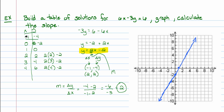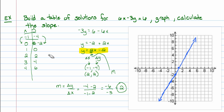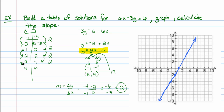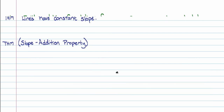I also want you to notice something here. When I start at x = -1 and take a step forward to x = 0 — a single step of 1 — the output changed from -4 to -2, an increase of 2. When I increase the input by 1 again, from 0 to 1, the output goes from -2 to 0, again increasing by 2. When I go from 1 to 2 on the input, the output again increases by 2. So every time I take a step of 1 in the x direction, the output changes by 2 — which happens to be the slope. That demonstrates what's called the slope addition property.